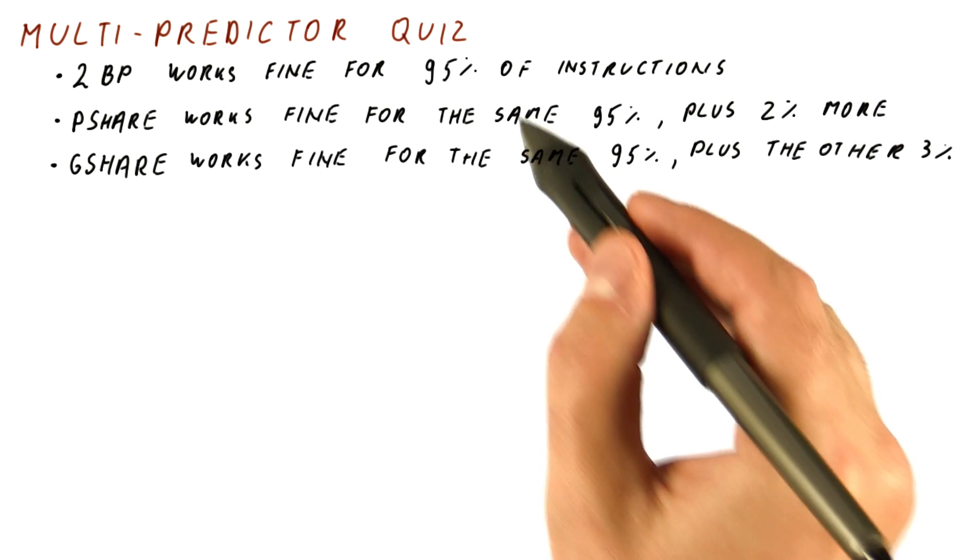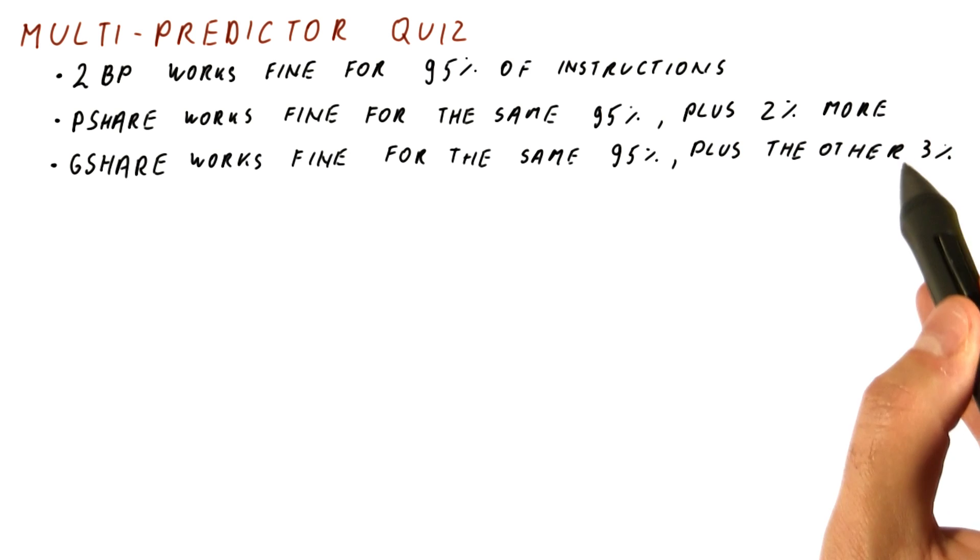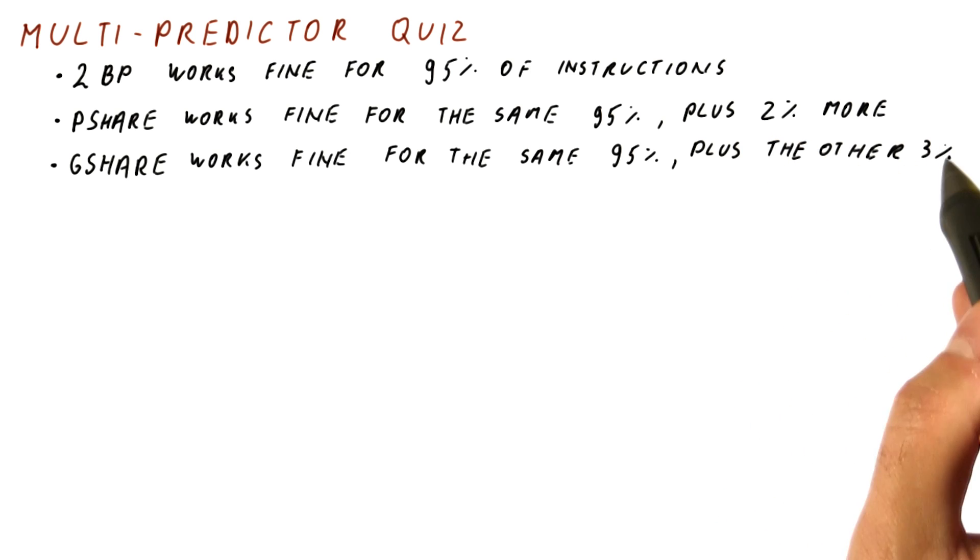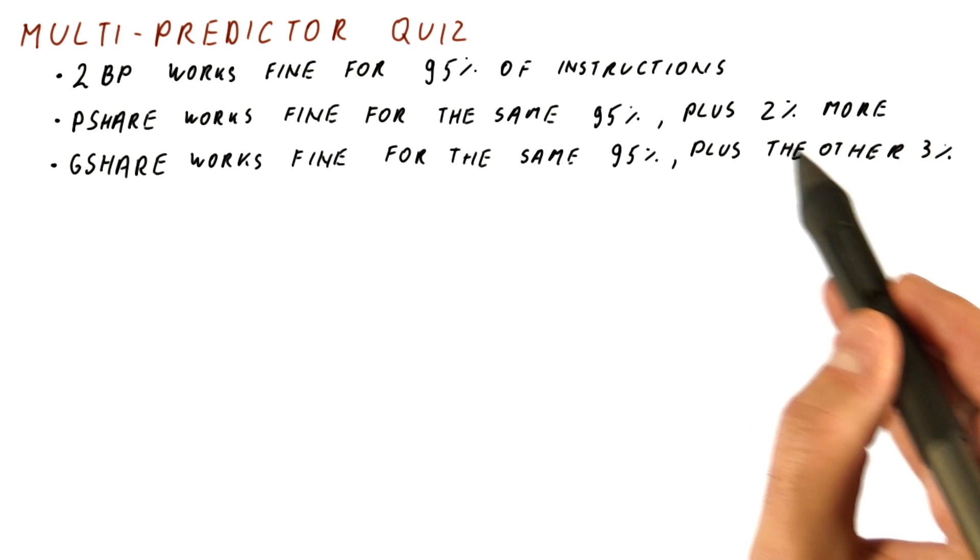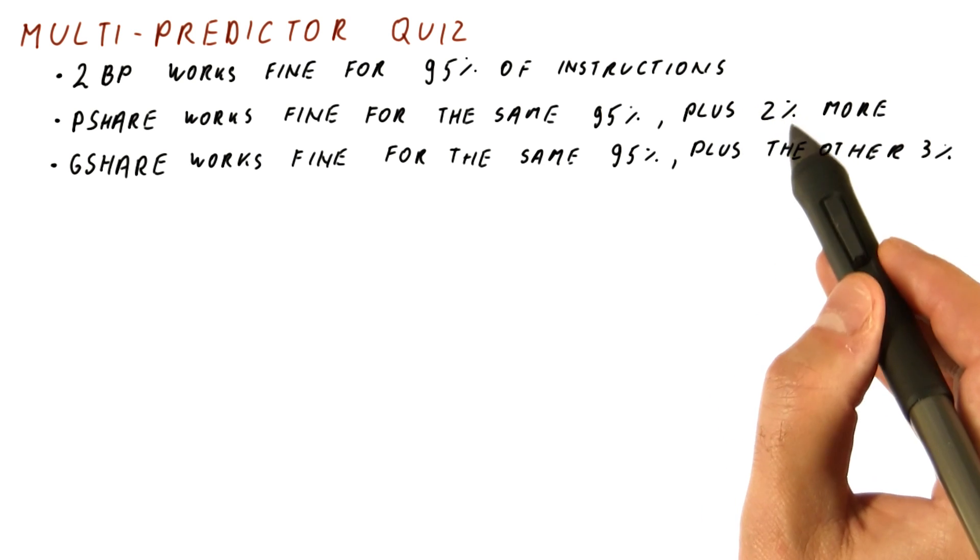95% of those are the same as the two-bit predictor, but the 3% that it covers in addition to that are different from the 2% that the P-share predictor covers.